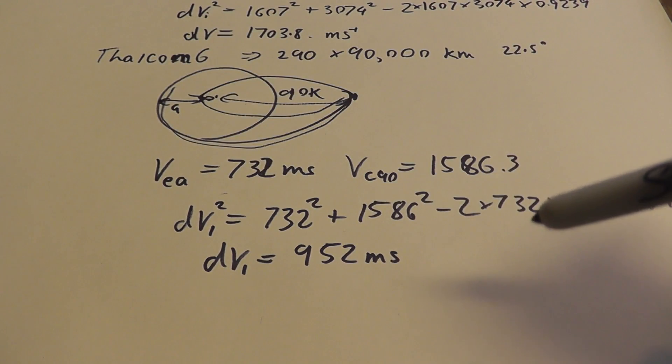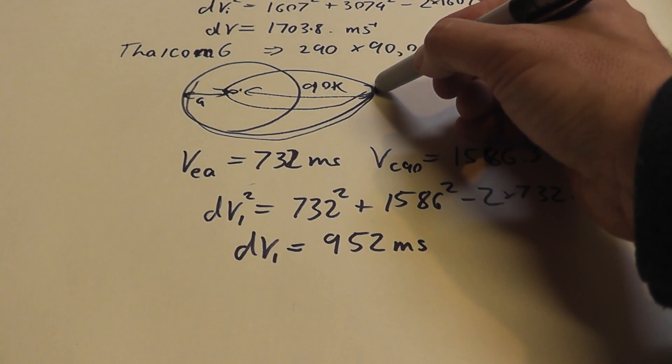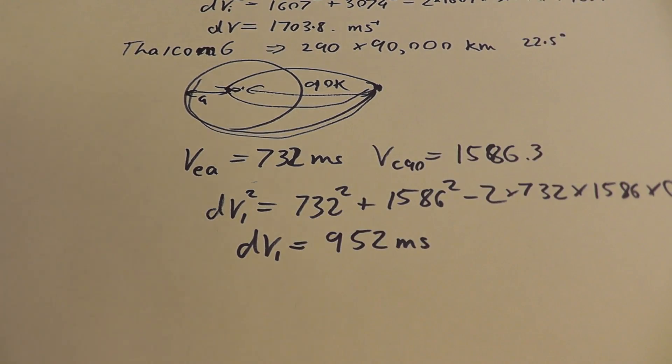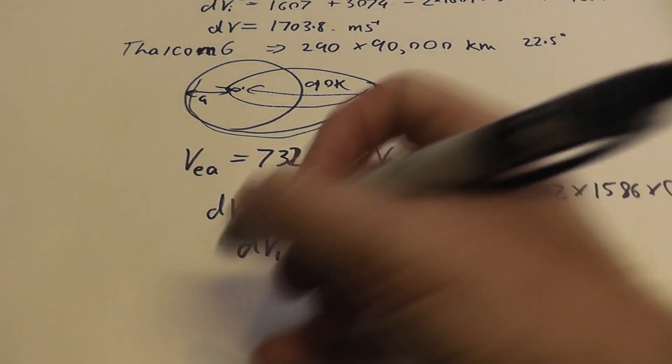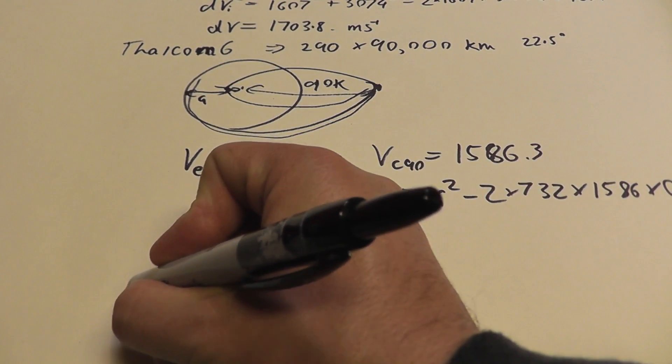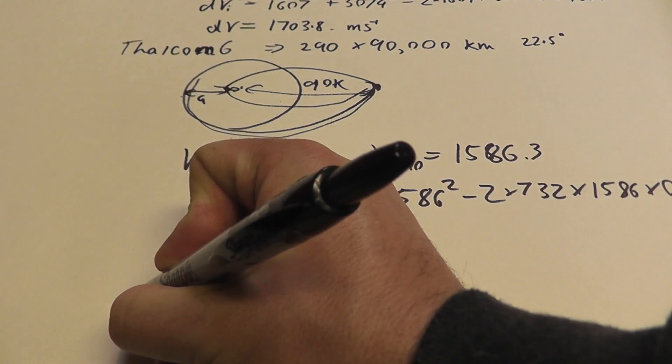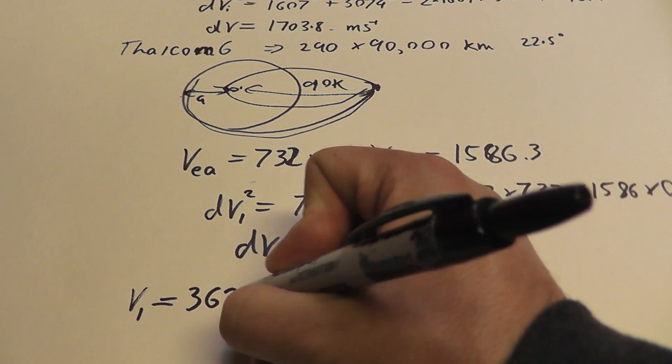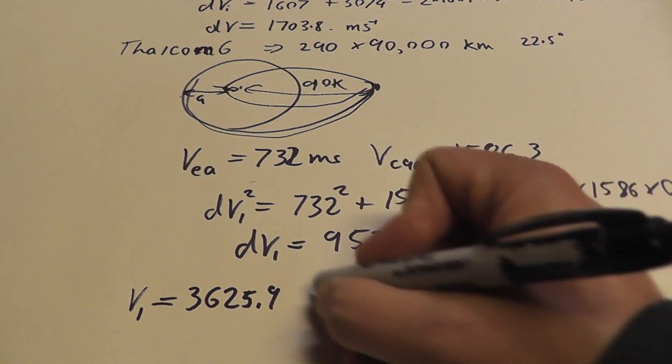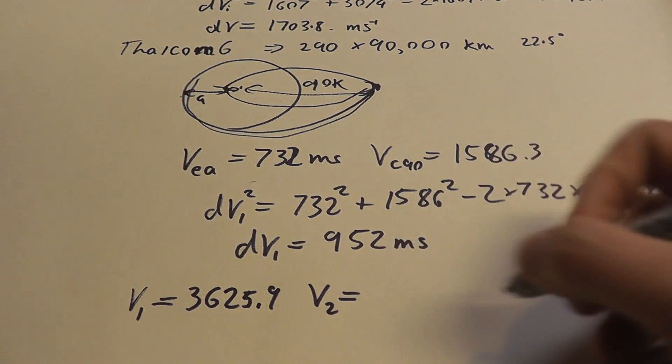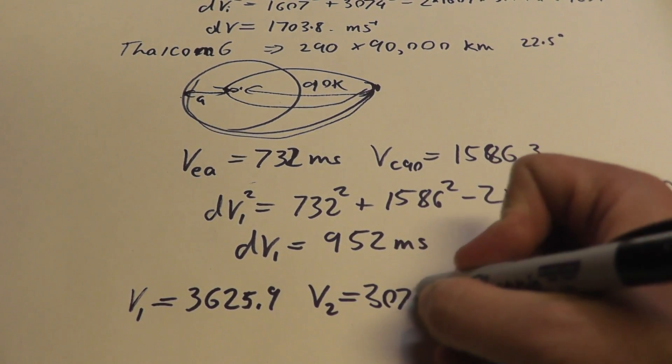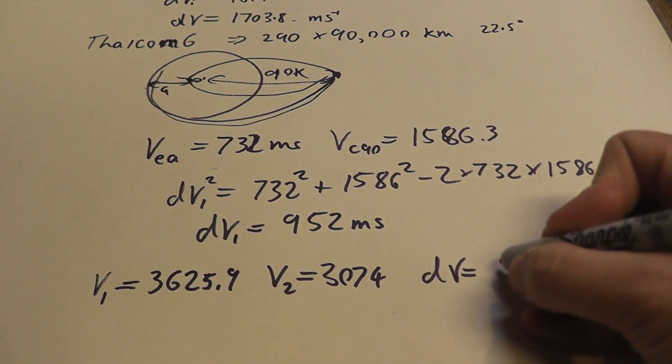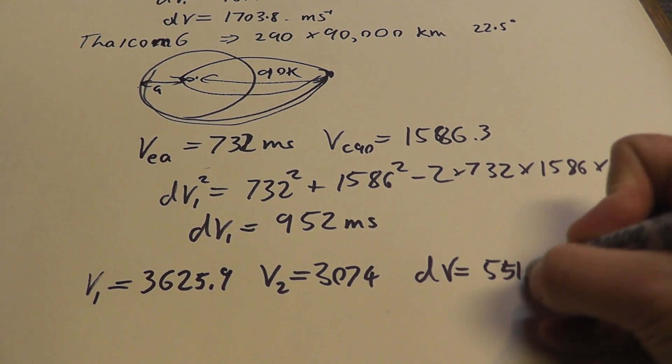But we don't need to do the inclination change anymore. From this 90,000 by geostationary orbit, the final velocity that we come down, we have V1 here, the initial velocity, V is equal to 3625.9. And V2 is equal to 3074. So, the delta V, in this case, is equal to 551.9.